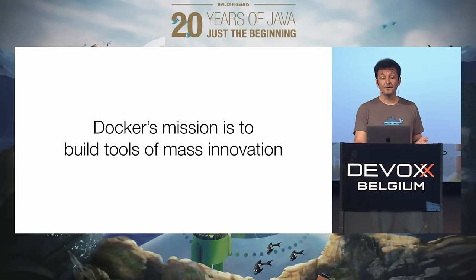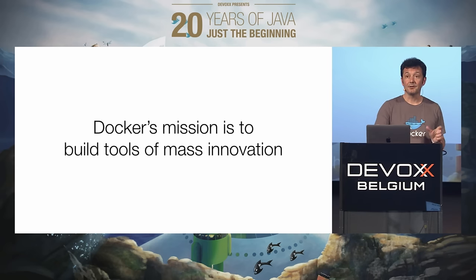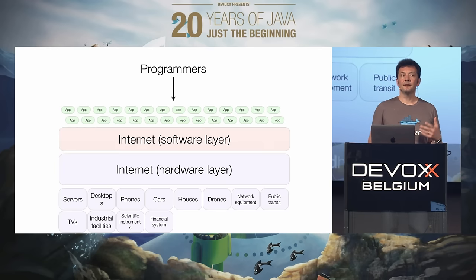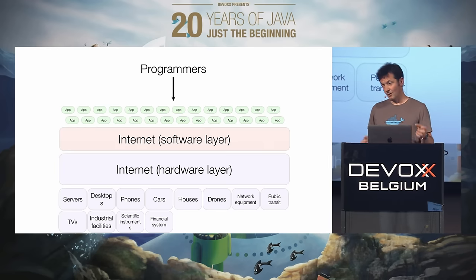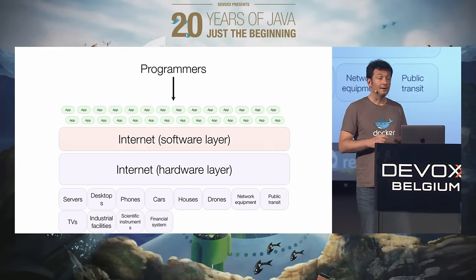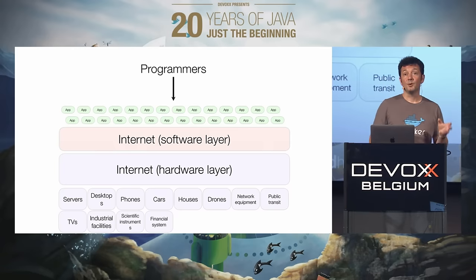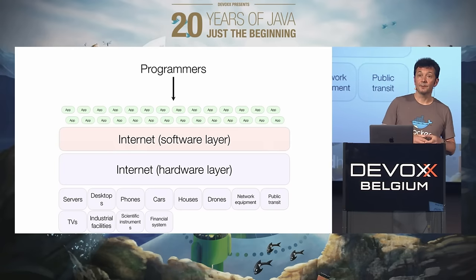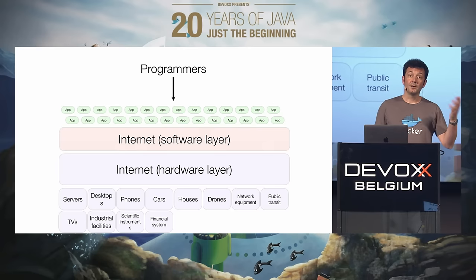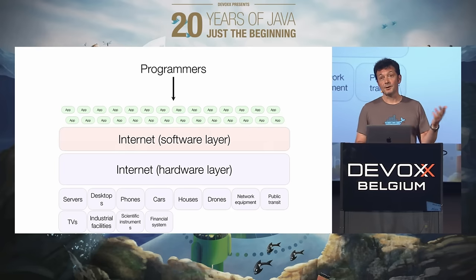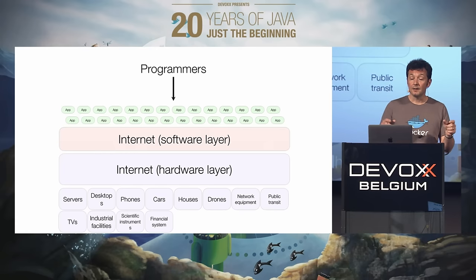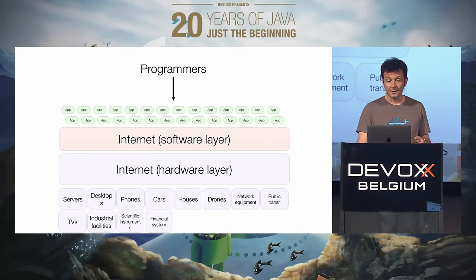Our mission at Docker is to build tools of mass innovation. What we mean by that is that the most interesting thing to program these days is the internet. There are lots of different devices, but there are silos for developers. If you're building for Android or for iPhone, if you're building for cars, you have different specialized operating systems. What we're trying to do is create a unified layer that people can use to program the internet.